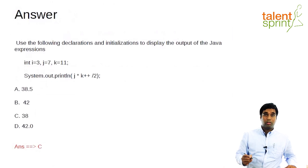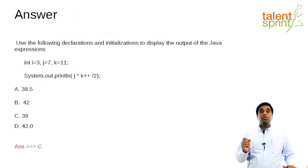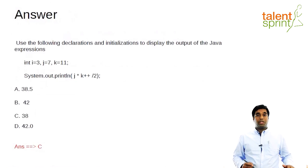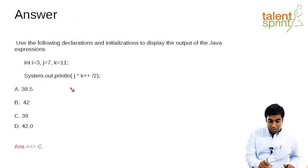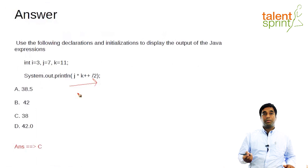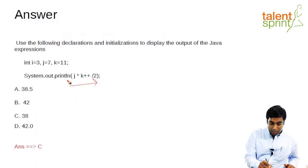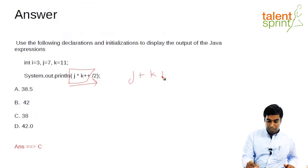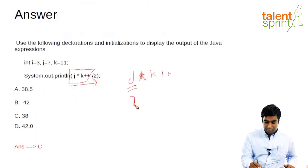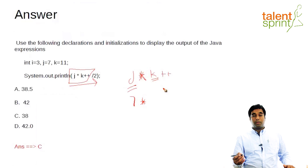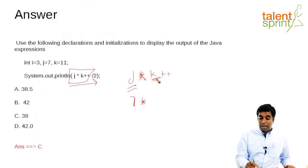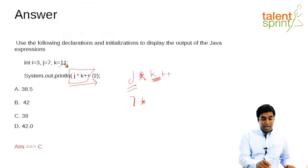So here we have two concepts. One is evaluating the expression — in Java, an expression is evaluated from left to right. Second is the precedence of operations. When you see this particular expression — J into K plus plus — the double-plus post-increment operator works by first evaluating the variable and then only assigning the new value. So the value of K used for evaluation will be 11 and not 12.